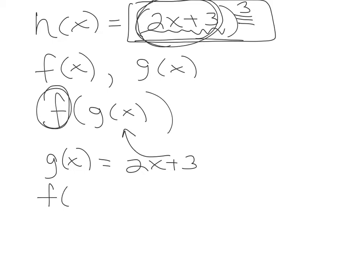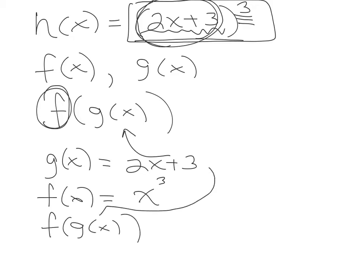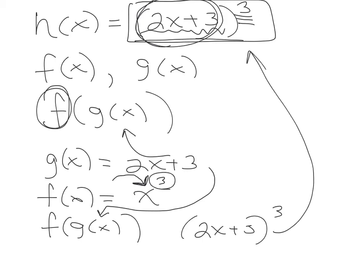For f of x, something is being cubed, and in algebra when we say something we use the variable, so f of x equals x cubed. We can check it using function notation: since g of x is the inner function, it goes inside f of x. Everywhere I see an x in f of x, I write 2x plus 3, giving me (2x plus 3) cubed — which is what I had originally.